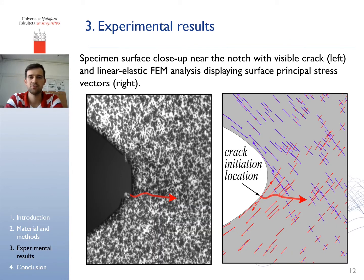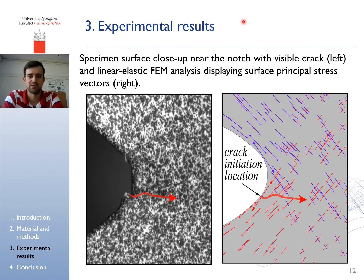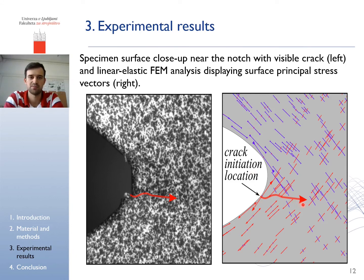An additional verification of the crack initialization location was done by a simple finite element analysis. The right image displays the principal stress vectors. We can observe a region of highly concentrated tensile stress, shown as thin red colored arrows, at the variable radius of the notch which corresponds with the actual crack nucleation site. Across the symmetry of the specimen, purple arrows show regions of compressive stress and unlikely sites for crack appearance. As the crack progressed further in depth of the specimen, the in-plane principal stress became similar in magnitude, corresponding to a homogeneous field of shear stress.